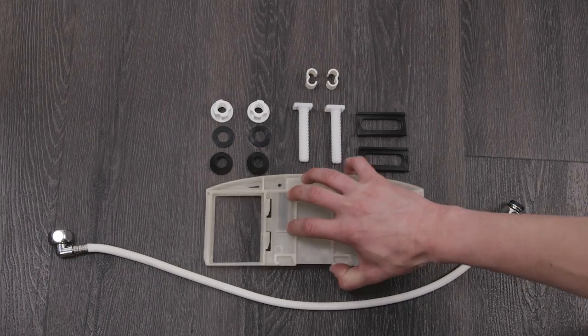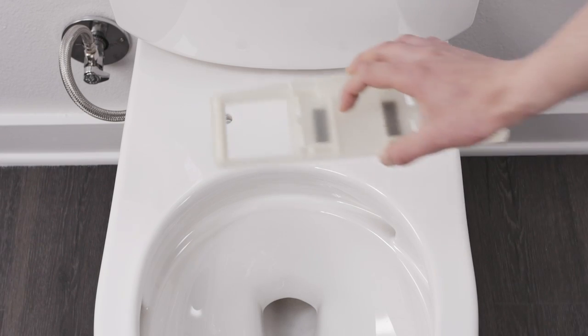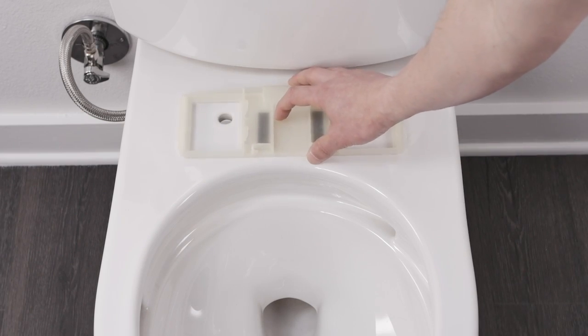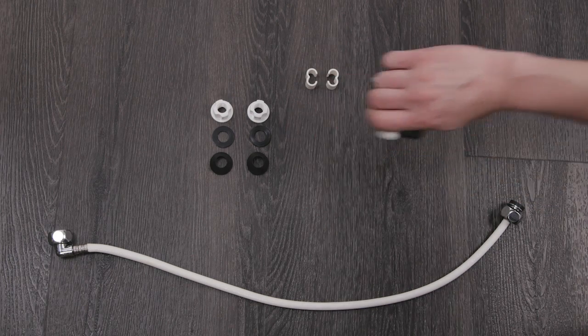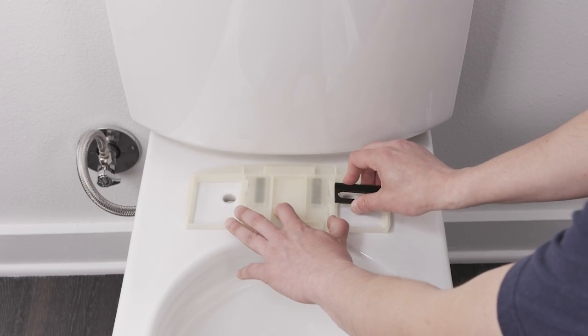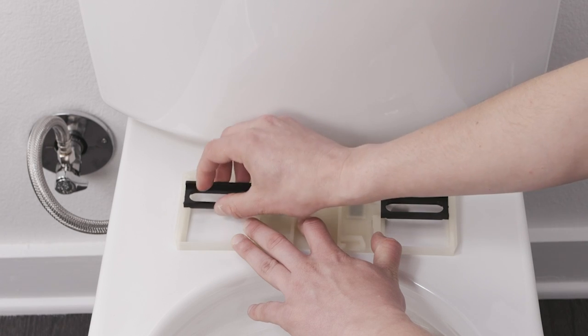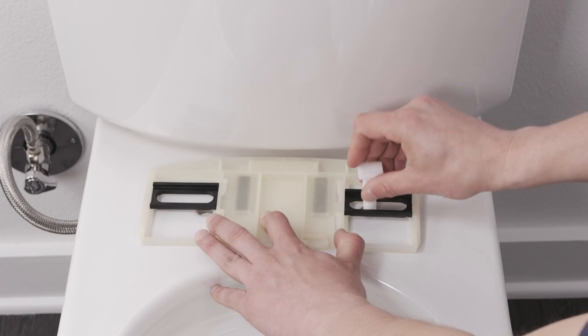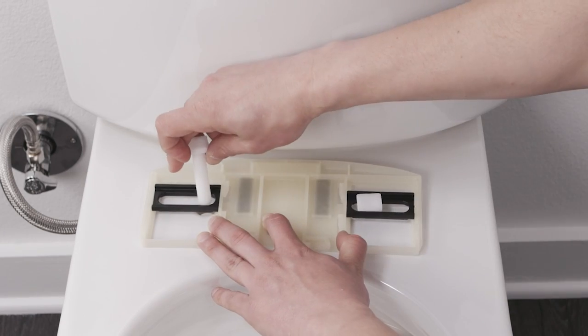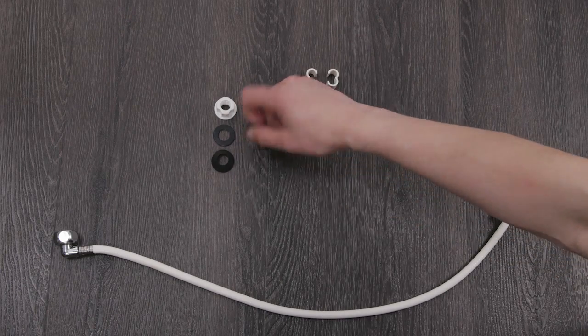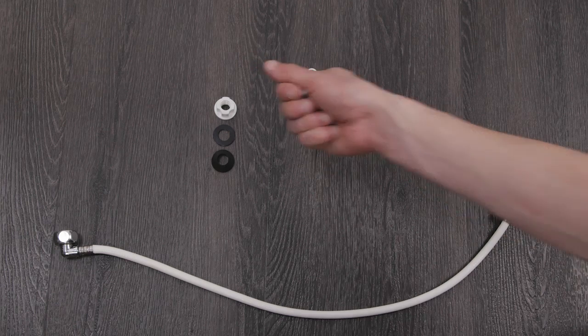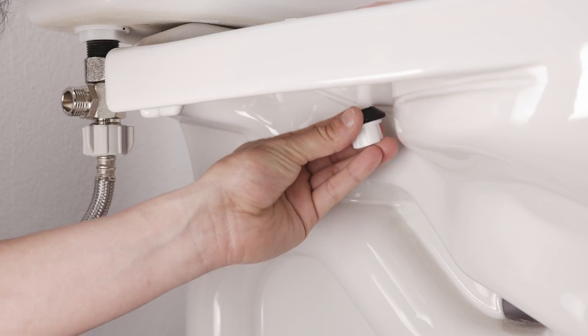To mount the Bidet Seat, place the mounting plate on the toilet over the bolt holes. Place the adjustable brackets in the plate over the holes and slide the bolts through the holes in the toilet. Secure the bolts with the provided washers and nuts, but leave the bolts loose enough to allow the seat position to be adjusted later.